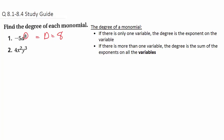If there's more than one variable — it could be 2, it could be 3 — let's look at this example with two variables. These are attached by multiplication: this isn't 4x² plus y³, it's 4x² times y³. So to get the degree, you add the 2 and the 3, giving a total degree of 5.